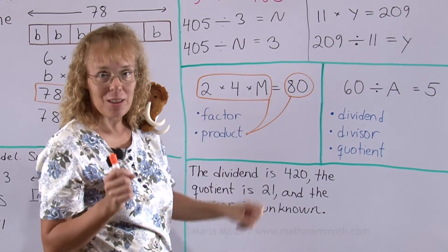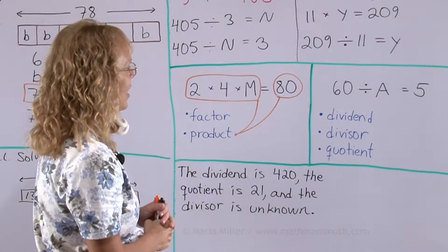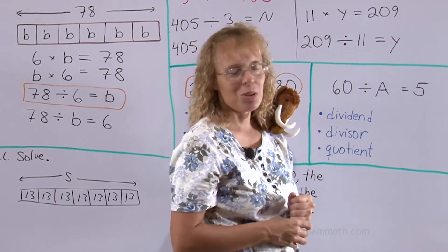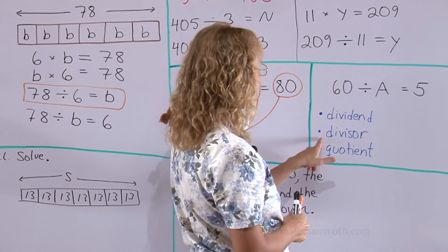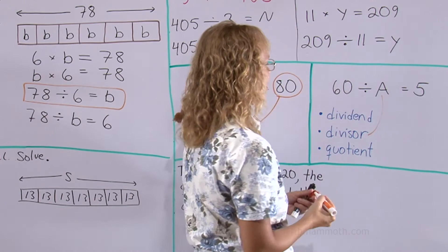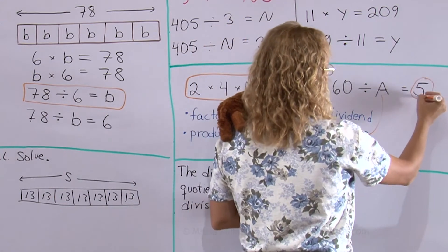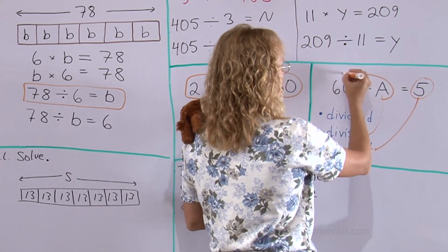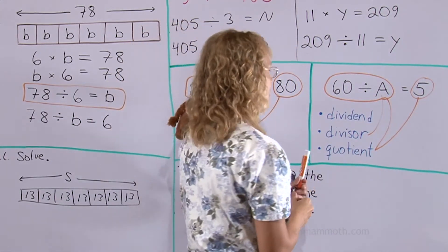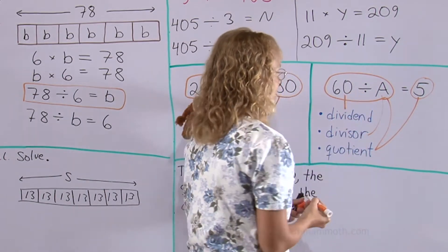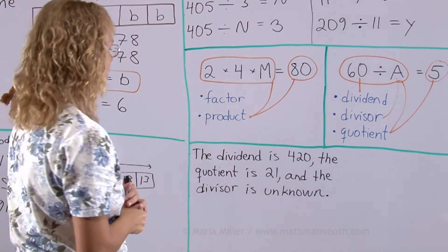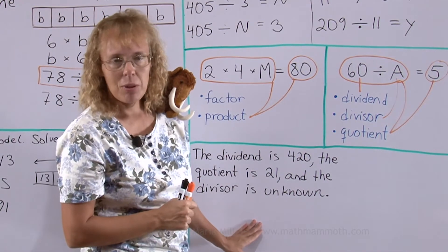And in division we have dividend, divisor and quotient, difficult terms to remember maybe. Divisor is the guy who is doing the dividing, that's the easiest maybe. A here is the divisor. Quotient is your answer but also this whole expression here is called the quotient of 60 and A. And then the dividend of course is what you divide, the first number.